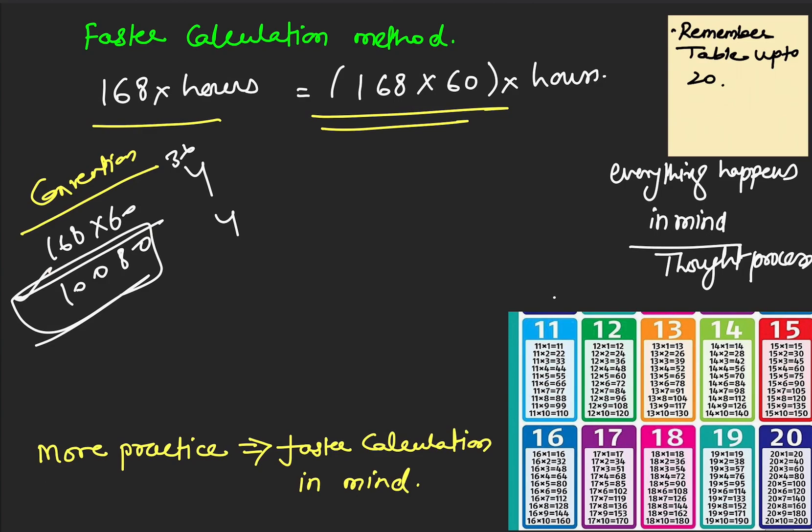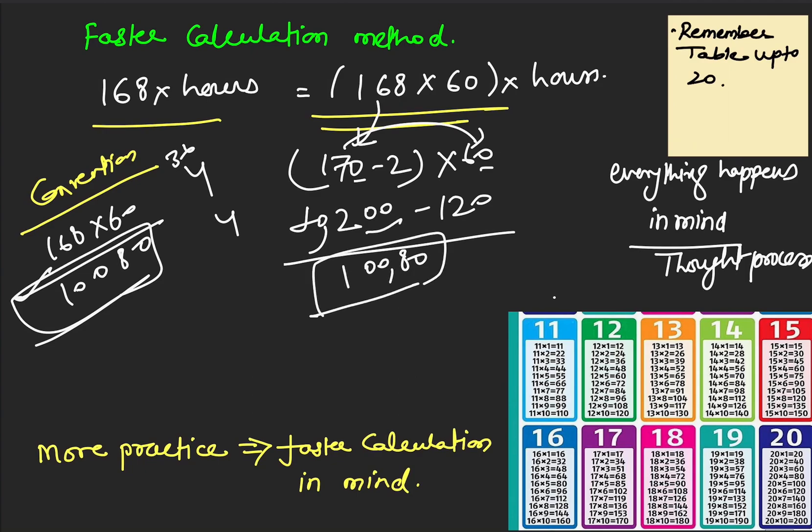But the faster method thought process goes like this: you convert this 168 into 170 minus 2, and then multiply by 60. So 170 times 60 is 10,200, and then 2 times 60 is 120. Now you've got 10,200 and you have to deduct 120. Simply you deduct 120 from 200 and you get 80, and this was 10,000, so 10,080.